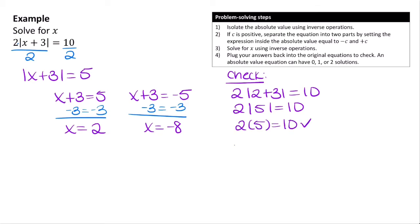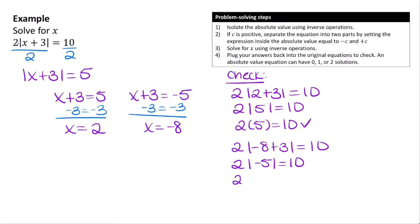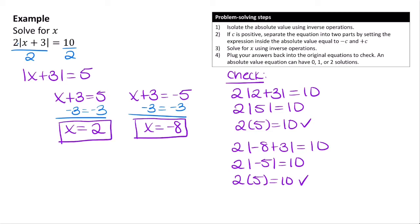Checking x = negative 8: 2|negative 8 + 3| = 2|negative 5| = 2 times 5 = 10. That's also true. So this equation has two solutions: x = negative 8 and x = 2.